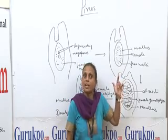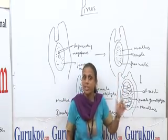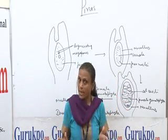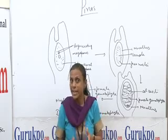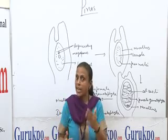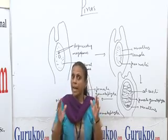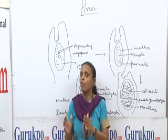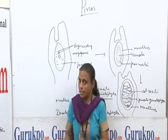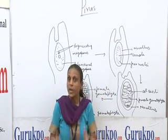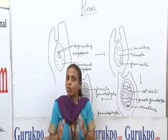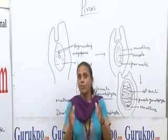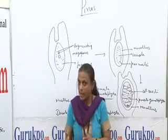The foliage leaves are acicular, needle-like and green in color. They help the plant in performing photosynthesis. A dwarf shoot having a group of foliage leaves is known as a foliar spur.